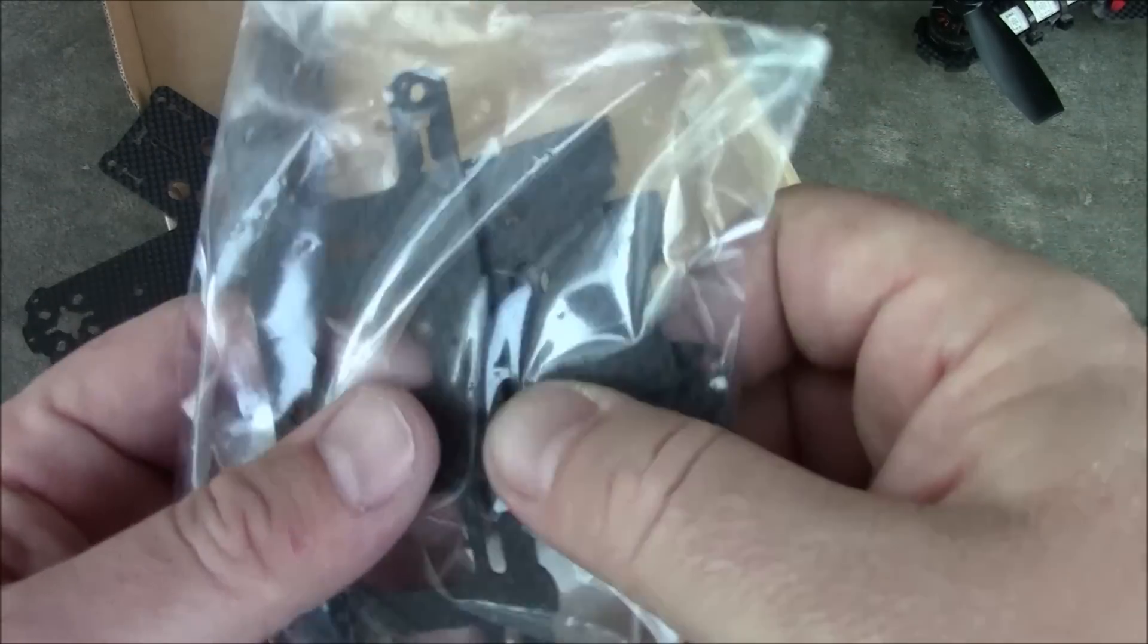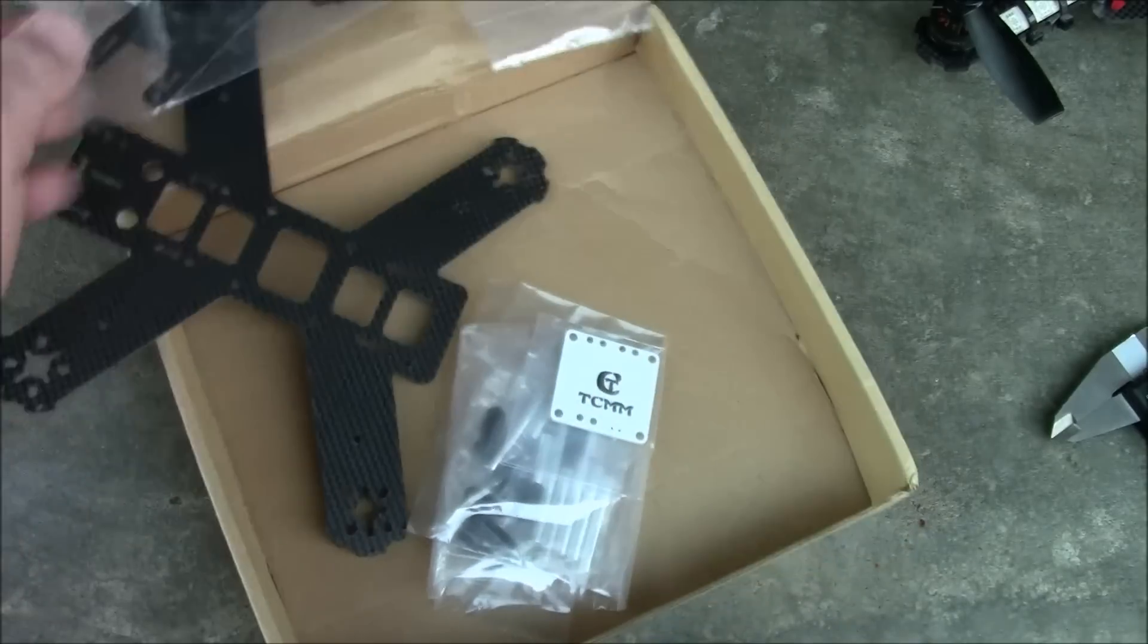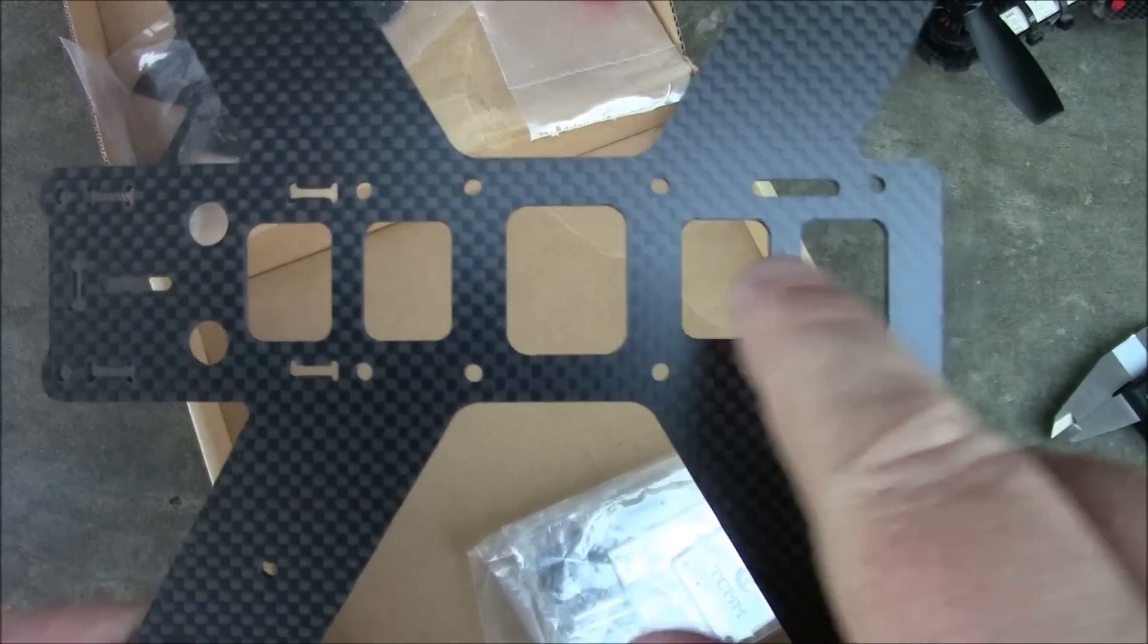Anyway this is the plates that it comes with. Kind of looks like the same as the other one where it has the main plate and the two sides for the camera mount. The main plate again, the hole looks a little bigger than the other ones.